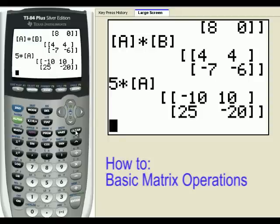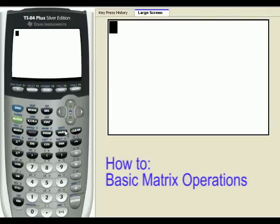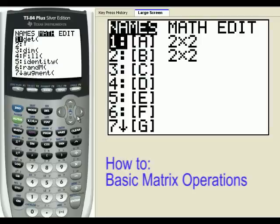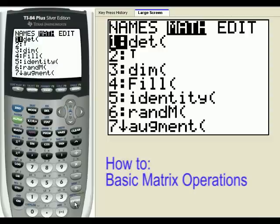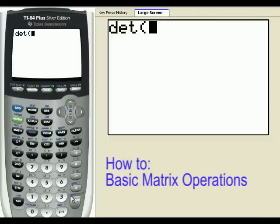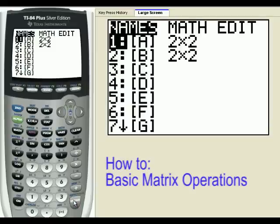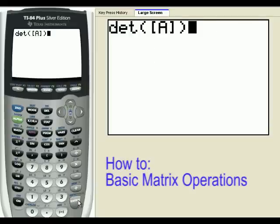Now the real lifting power of the calculator is to do things like finding the determinant and finding the inverse of a matrix. We can find the determinant like this: second, matrix, and then we go to math. And it's the first one on the list, det. And this will find the determinant of matrix A, negative 2.